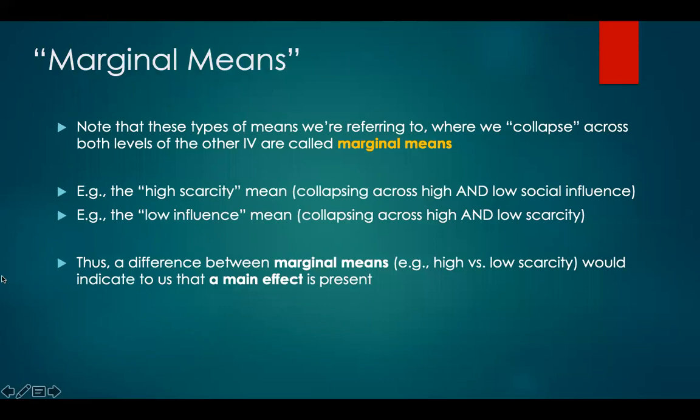The types of means we refer to when we collapse across both levels of the other independent variable are called marginal means — and by collapse, I mean average. For example, the high scarcity mean collapsing across high and low social influence, and the low influence mean collapsing across high and low scarcity. A difference between marginal means — high versus low scarcity — would indicate that a main effect is present.